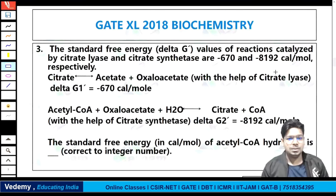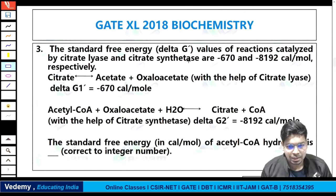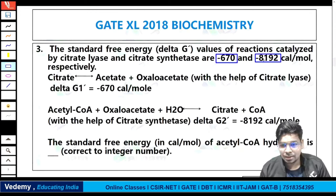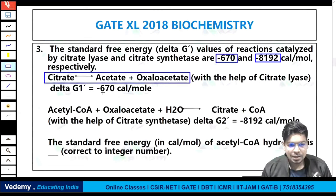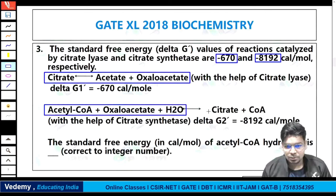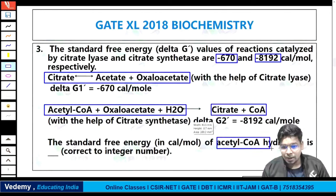The next question is about standard free energy change. The standard free energy delta G values of reactions catalyzed by citrate lyase and citrate synthase are minus 670 and minus 8192 calorie per mole respectively. Citrate lyase converts citrate to acetate and oxaloacetate (delta G1 = -670 cal/mol). The second equation: acetyl-CoA + oxaloacetate + H2O converts to citrate + CoA with delta G2 = -8192 cal/mol via citrate synthase.